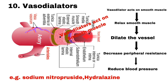Number 10 is Vasodilators. Vasodilators are direct acting smooth muscle relaxants and dilate vessels by relaxing smooth muscle. Vasodilators act to decrease peripheral resistance, thereby lowering blood pressure. Examples of Vasodilators are Sodium Nitroprusside and Hydralazine.